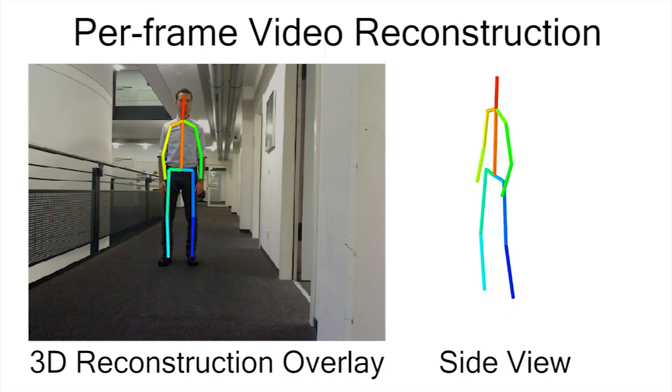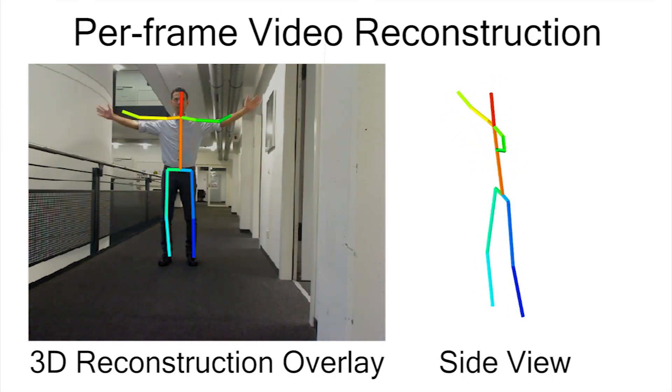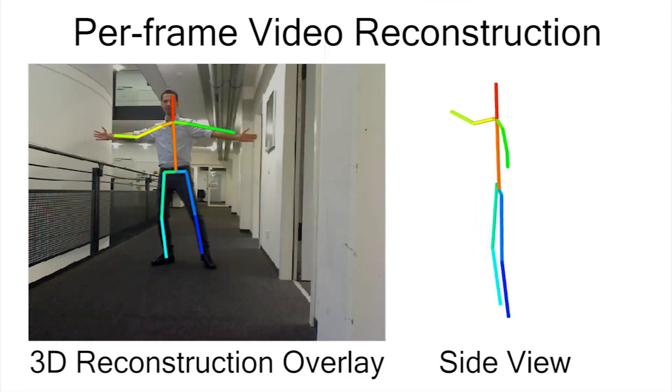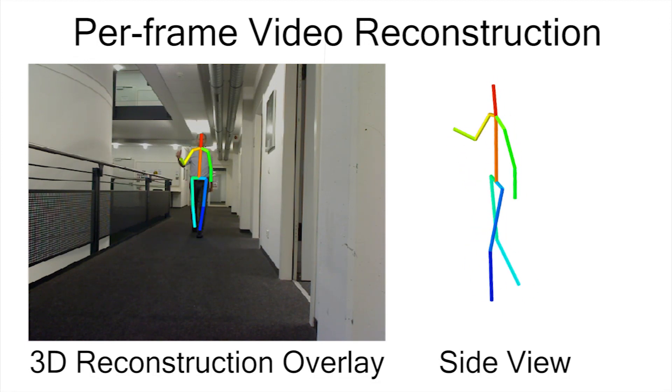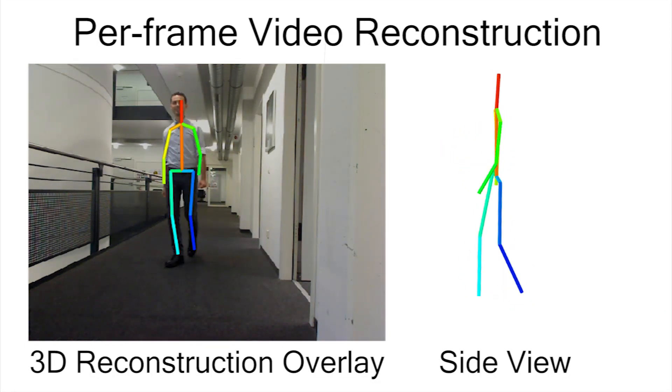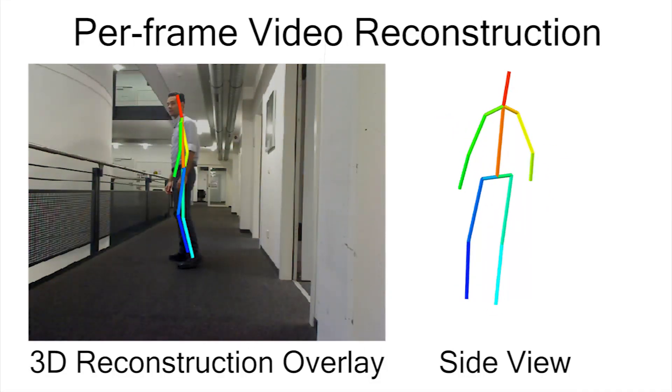It can be applied to videos frame by frame without any manual pre-processing, such as this webcam video in a general environment. On the right, the predicted 3D pose is rendered from a side view. Note that the slight jitter arises due to per-frame estimation and can be filtered out.